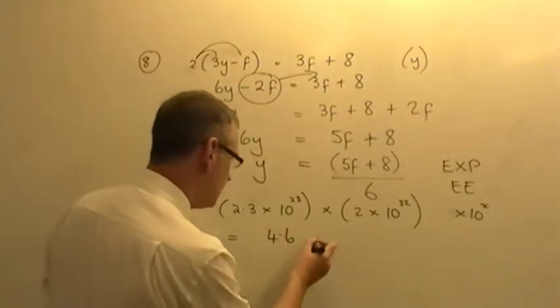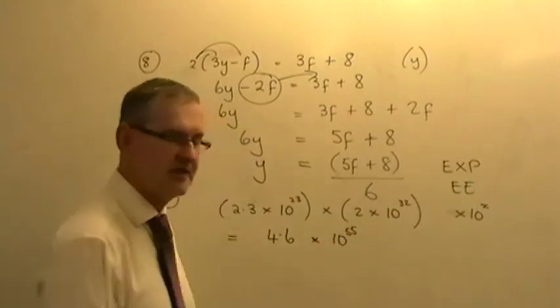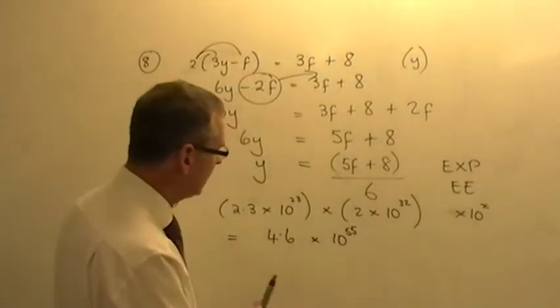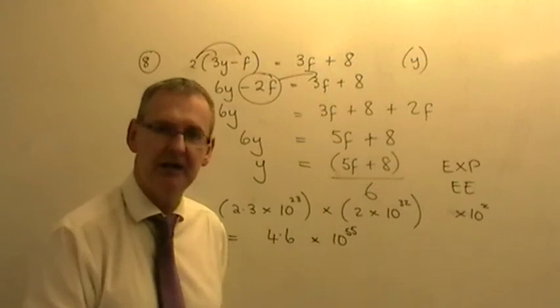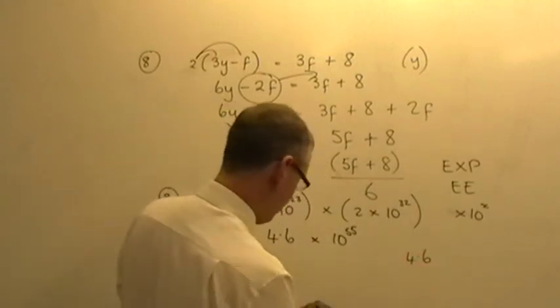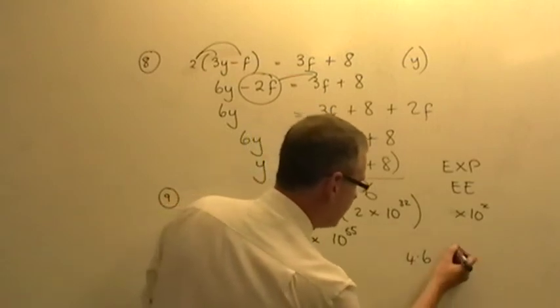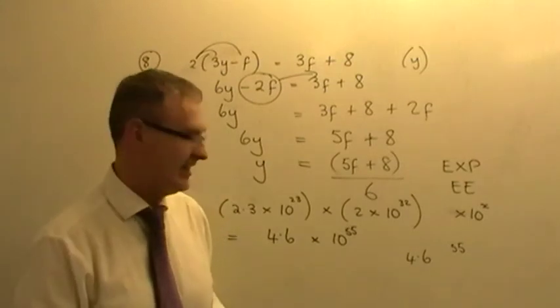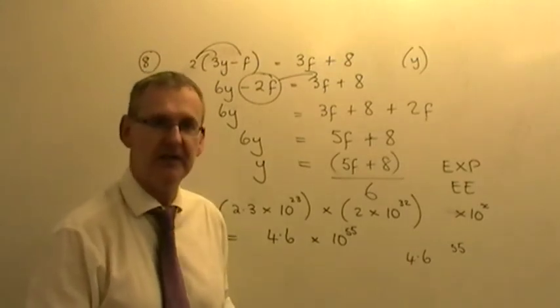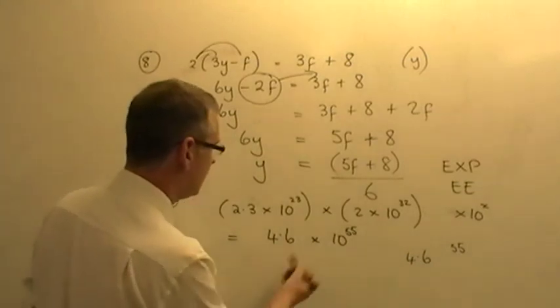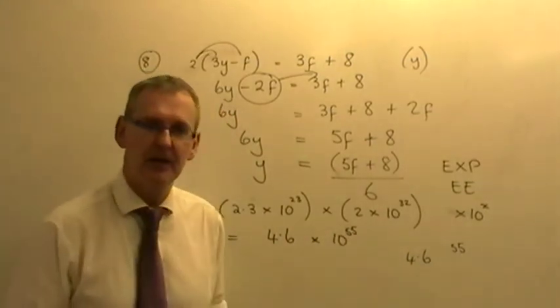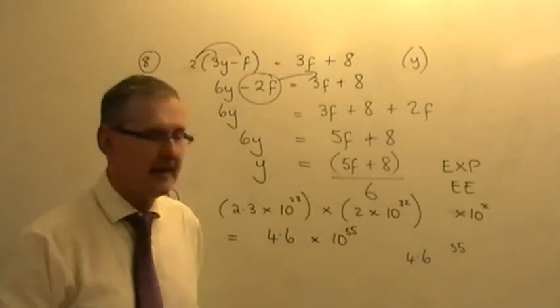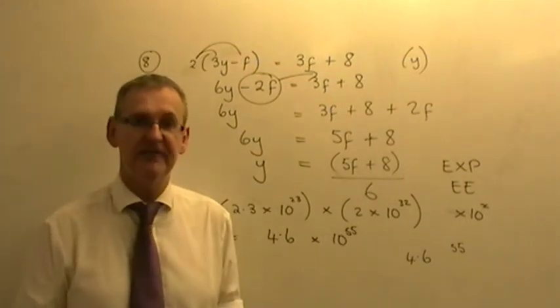And you get an answer of 4.6. And then you need to make sure that whatever version your calculator says in standard form notation, that you write it down like that. Most calculators nowadays will actually write it on the display like that. Some calculators will give you the answer like this. 4.6, like this one does, in fact. And there's just a little gap. And then 55 at the side. You've got to realise that does not mean 4.6 to the power of 55. It means 4.6 times 10 to the power of 55. And there's the answer using a calculator on a paper 2 to get the answer to question 9. And that is the last of the solutions for this first practice test.